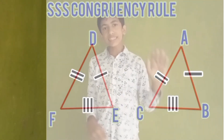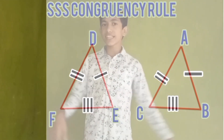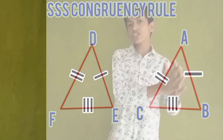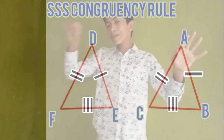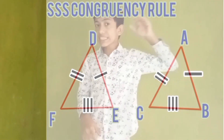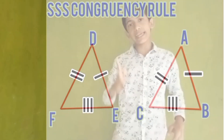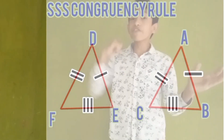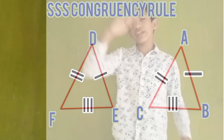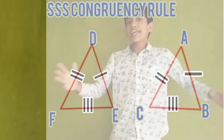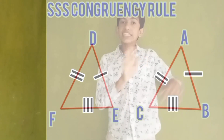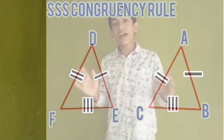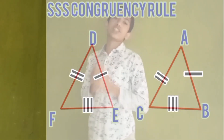Congruency rule first: Side-Side-Side (SSS) congruency rule. Two triangles are said to be congruent if all three sides of one triangle are equal to the three sides of another triangle. For example, triangle ABC and triangle DEF: if AB equals DE, BC equals EF, and CA equals FD, then the triangle is said to be congruent by SSS congruency rule.